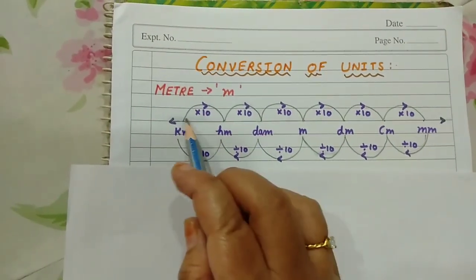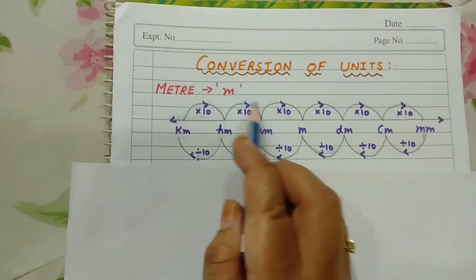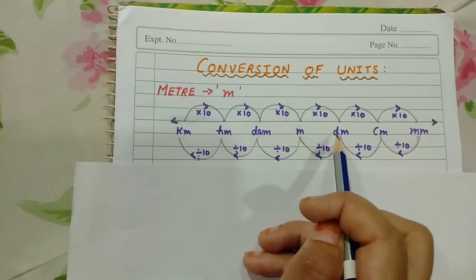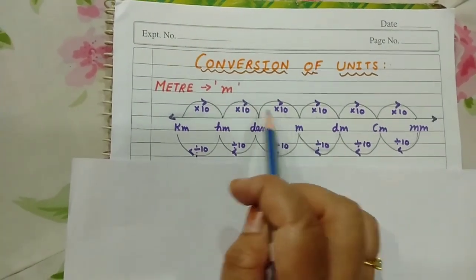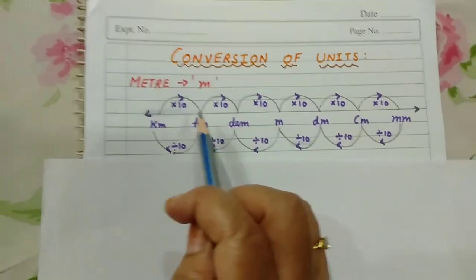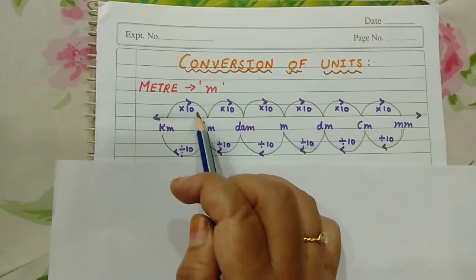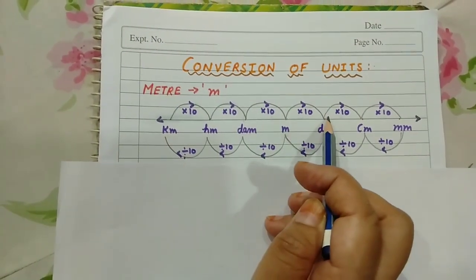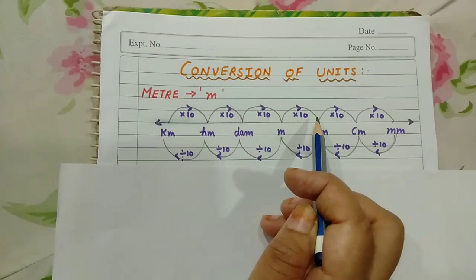Kilometer to decimeter is 10 into 10 into 10 into 10, which is 10,000. Kilometer to centimeter is 10 into 10 into 10 into 10 into 10. I know this is clear for conversion.